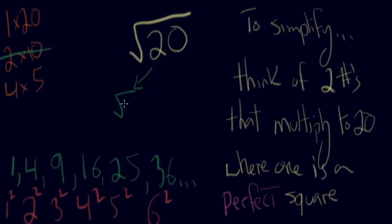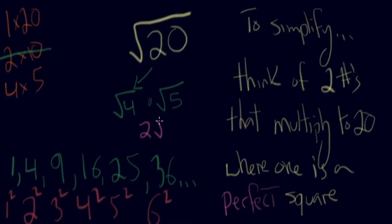So we can say the square root of four times the square root of five gives us the square root of 20. What's the square root of four? It's two. And the square root of five stays as the square root of five. So your simplified version of the square root of 20 is two root five.